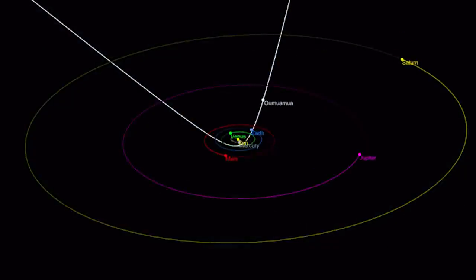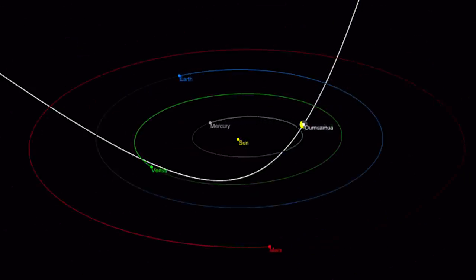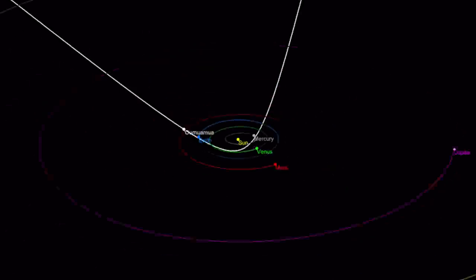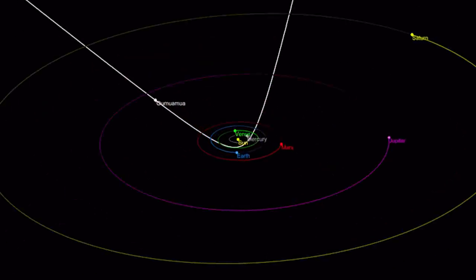At its fastest, just as it slingshot around the star, it reached a blinding 87.3 kilometers a second or 196,000 miles per hour. Although Oumuamua lost speed considerably as it climbed away owing to the intense gravitational pull of the Sun, it maintains a velocity of around 26 kilometers a second as it flies along its new trajectory.